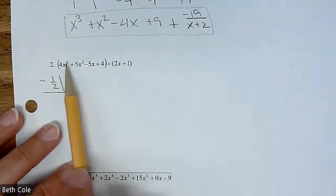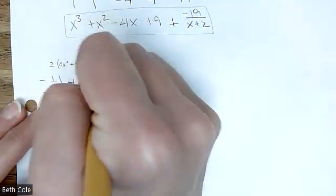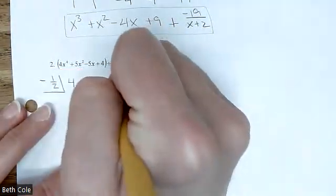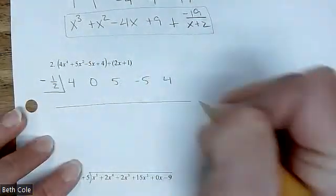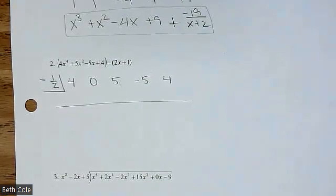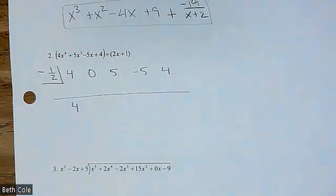Is everything else okay though? 4, 2, 1, 0? Okay. So it's going to be 4, 0, 5, negative 5, 4. I know there's a fraction and it's negative — double whammy. But you're still going to do the exact same thing. It's the same process. Bring the first number down.